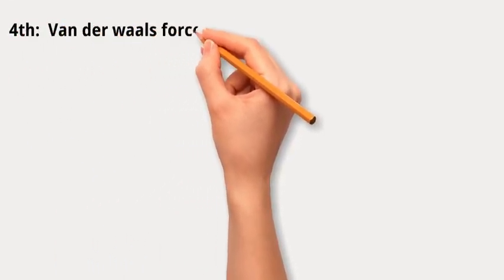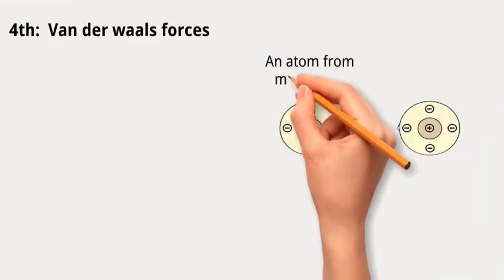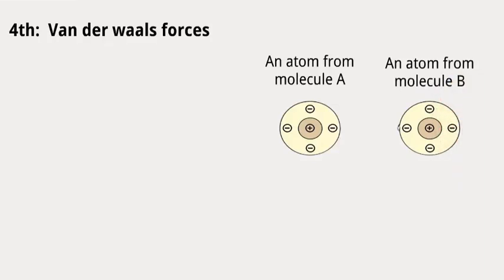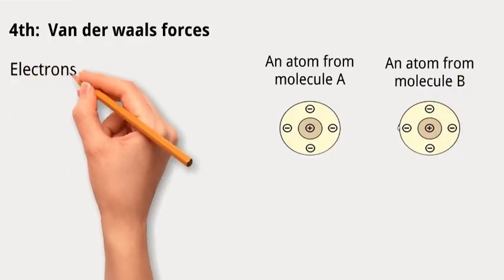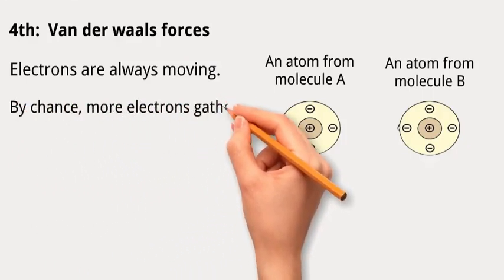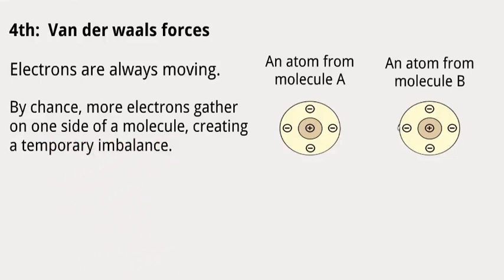Fourth, van der Waals forces. Imagine you have two molecules hanging out next to each other. Even though they're not charged like magnets, they still attract each other a little bit. This attraction happens because electrons are always moving. Sometimes, by chance, more electrons gather on one side of a molecule, creating a temporary imbalance. This makes the molecule a bit like a tiny magnet for a moment.